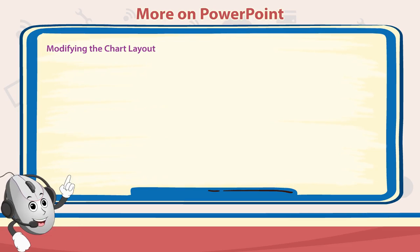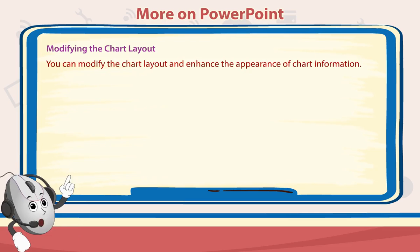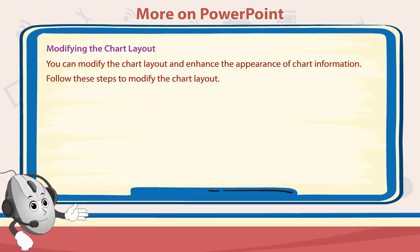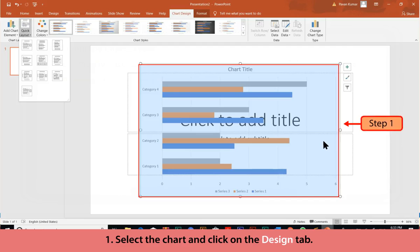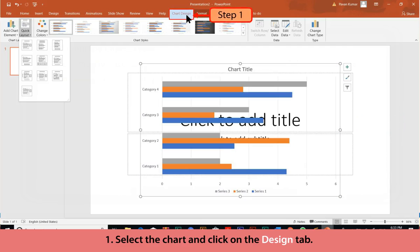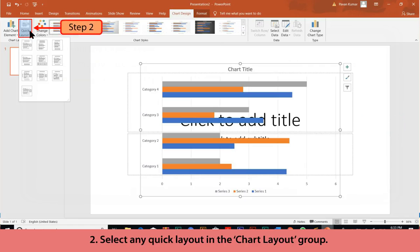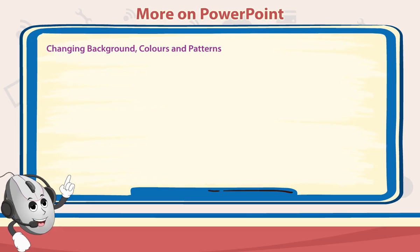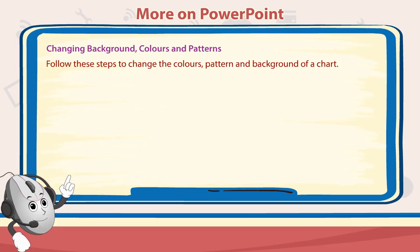Modifying the Chart Layout: You can modify the chart layout and enhance the appearance of chart information. Follow these steps: Select the chart and click on the Design tab, then select any Quick Layout in the Chart Layout group. To change the colors, pattern, and background of a chart, right-click on the chart area and select the Format Chart Area option from the list — a Format Chart Area dialog box appears.